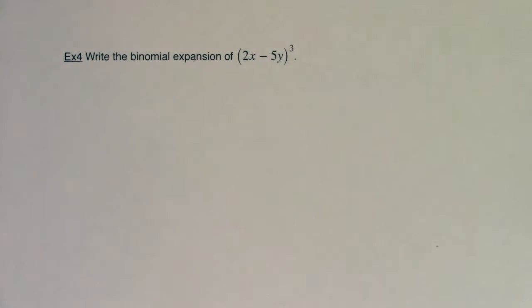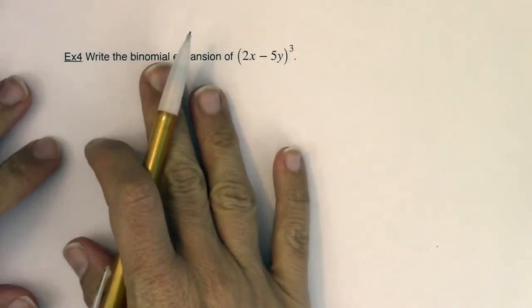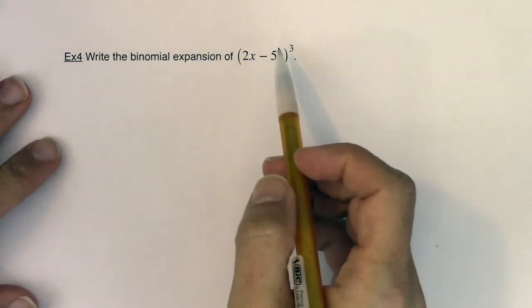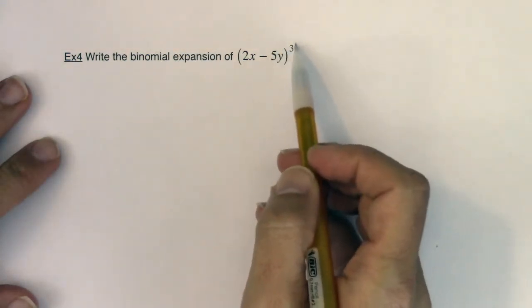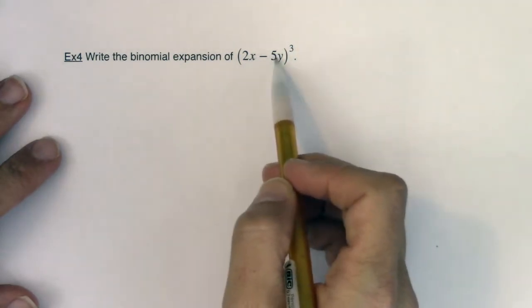Hey Math 31, let's take a look at another binomial expansion. Example 4 is more complicated than example 3, even though the exponent is less. Instead of having something to the eighth we only have something cubed.